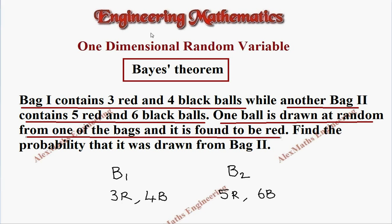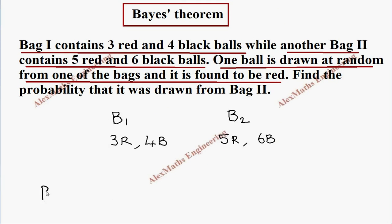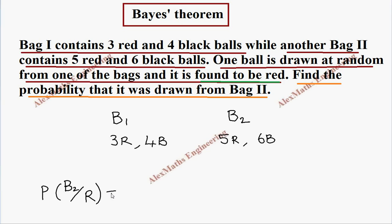The ball drawn is found to be red, so we already know the drawn ball is red. Whatever we already know will come in the denominator part — P(B2 | R). They are asking: find the probability that it was drawn from bag two, so bag two will come in the numerator part.